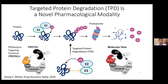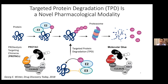Targeted protein degradation is a novel pharmacological modality that utilizes a small molecule to recruit a protein of interest and an E3 ubiquitin ligase into proximity, allowing for ubiquitination and subsequent degradation of the protein target. This molecule could be a PROTAC — a hetero-bifunctional small molecule consisting of a ligand for an E3 ligase and a ligand for the protein of interest connected by a linker — or a molecular glue, which induces a novel interaction between an E3 and a protein of interest.